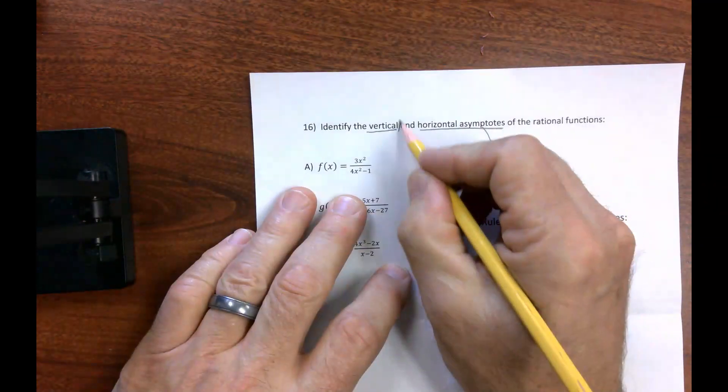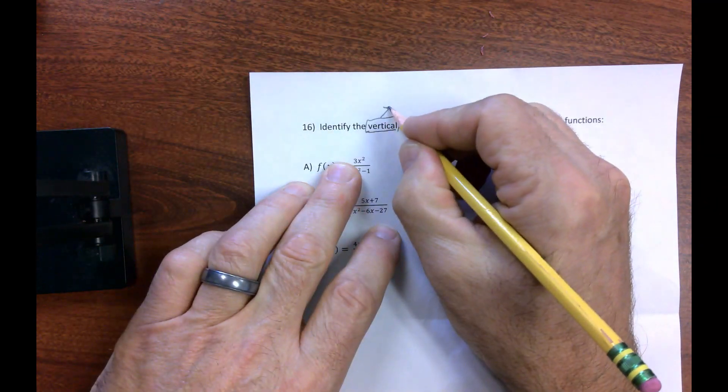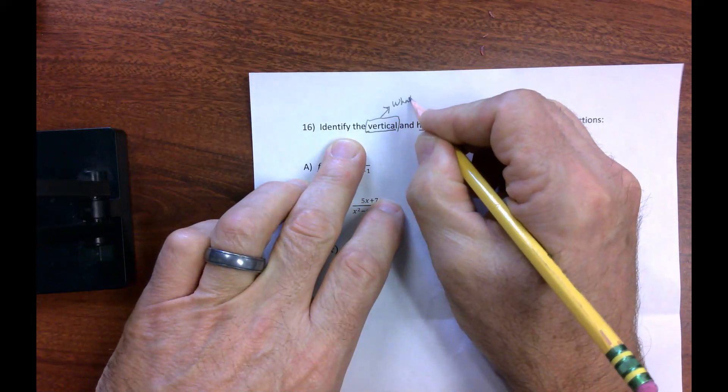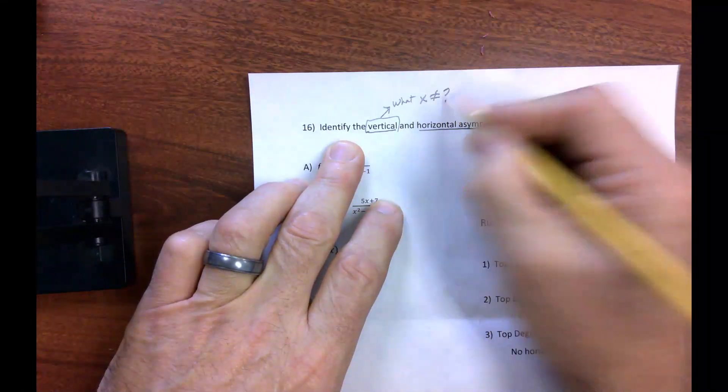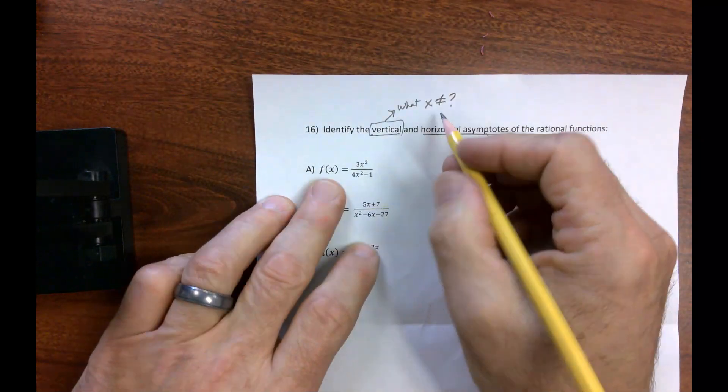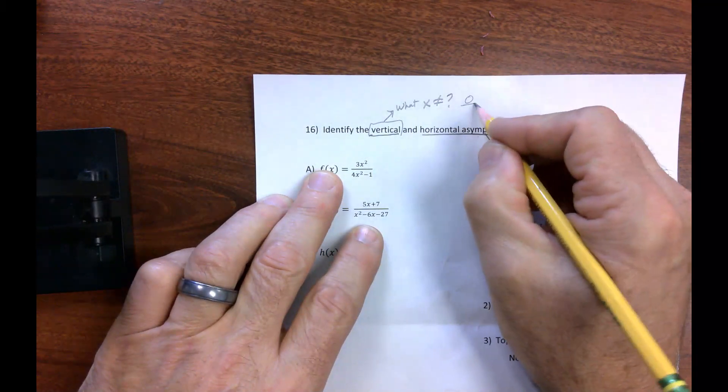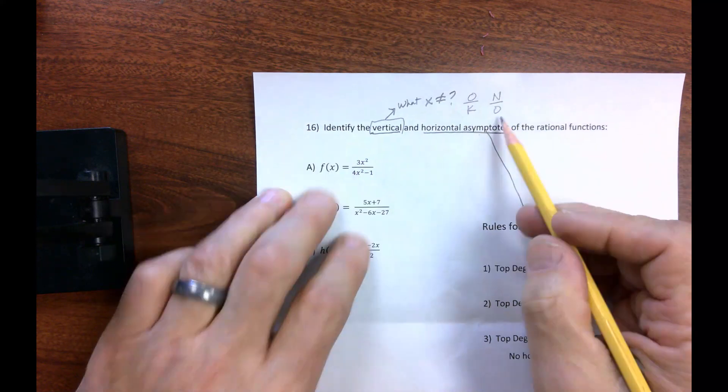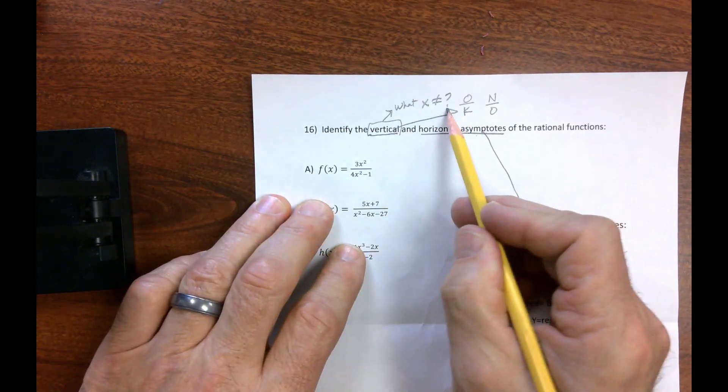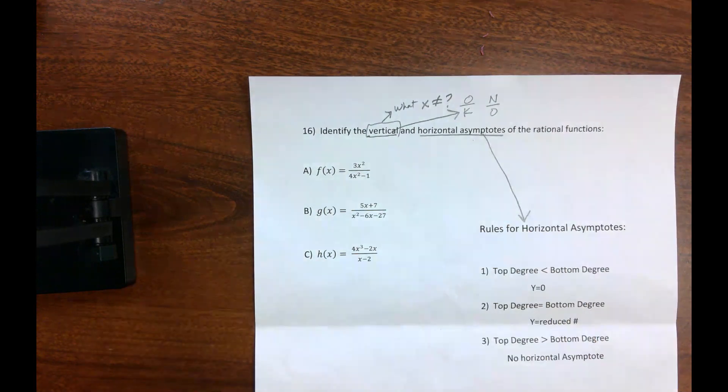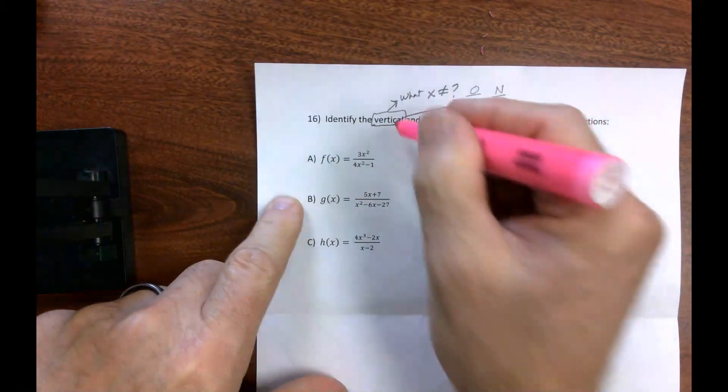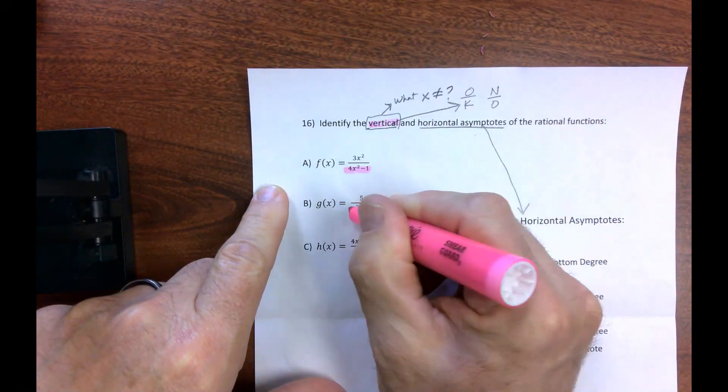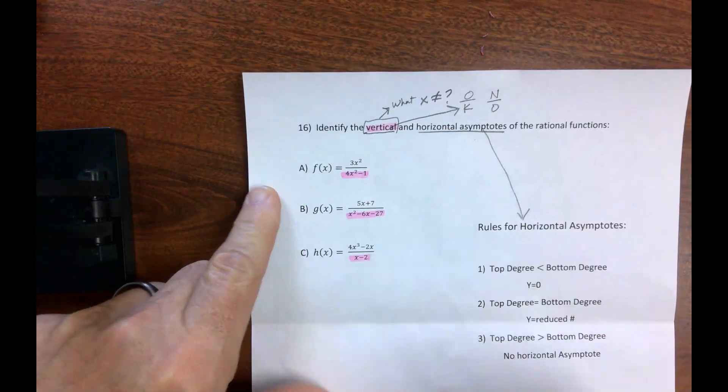The vertical asymptote, you are wondering what can't x equal? And to do that, we've got to remember that it's okay to have a zero in the top, but no zeros in the bottom. That's the rule for vertical asymptotes. So for vertical asymptotes, we are going to concentrate on the denominators only, and I'm going to take care of all three of these.